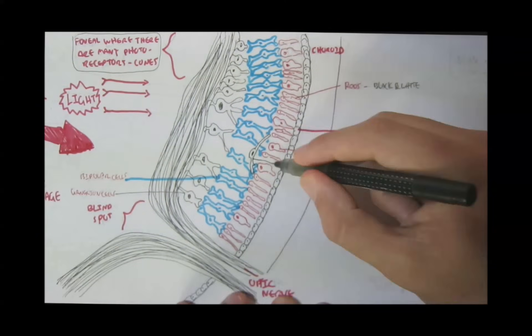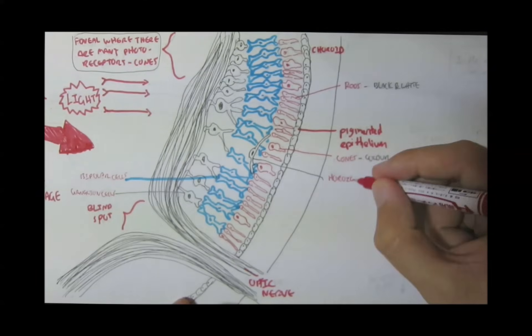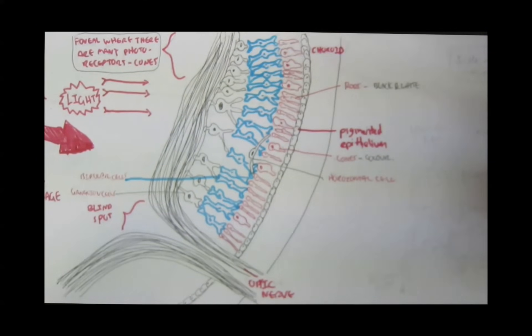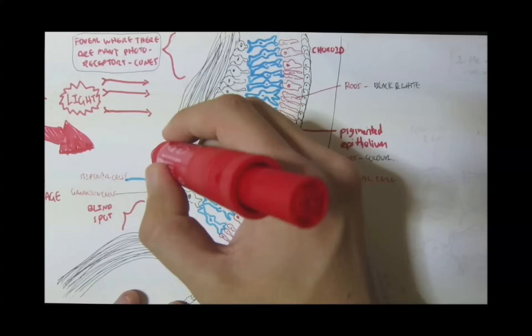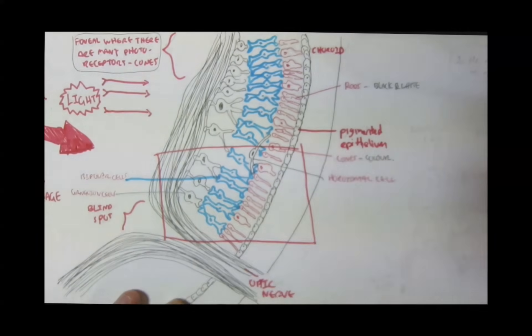Then, you also have these horizontal cells, which help relay signals between photoreceptors, you can say. So, if you zoom again onto this section and see the process of vision again, step by step.